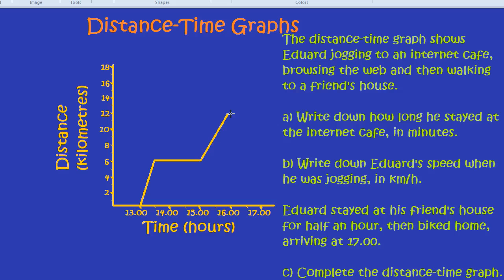Let's look at the question though. The distance time graph shows Eduard jogging to an internet cafe, browsing the web, and then walking to a friend's house.